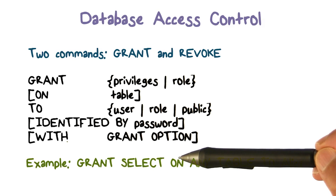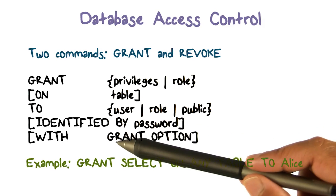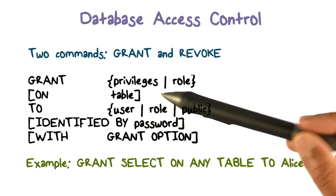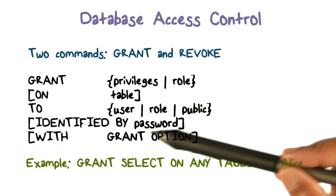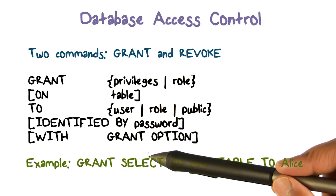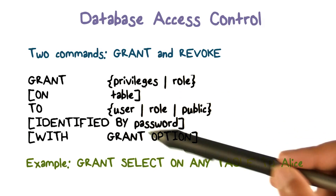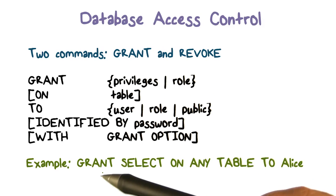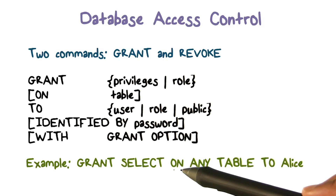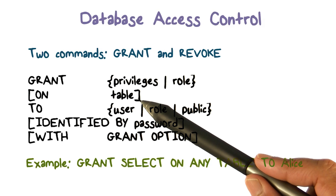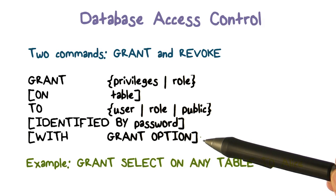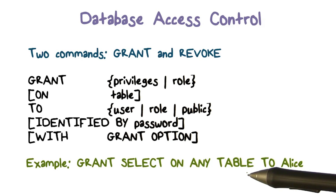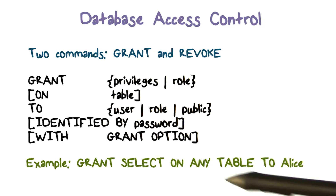Another optional thing is that whoever you're granting this access to — the user or the role — they can actually further propagate it. That's the grant option, saying: I give you access, and you can give this access to somebody else if this is specified. An example would be a statement that grants the select privilege on any table — omitting the specific table since it's optional — to user Alice. Since we didn't include the grant option, Alice will not be able to further propagate this select access to somebody else.